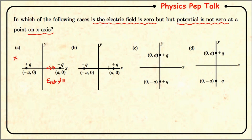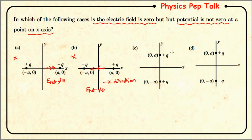For option B, which also constitutes a dipole arrangement, at a point on the x-axis the electric field due to the positive charge acts in one direction, and due to the negative charge also acts in the same direction. Therefore the net electric field in this case is also not equal to zero — it is along the negative x direction. Therefore option B is also wrong.